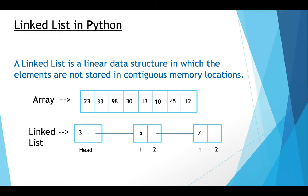The elements of a linked list are called nodes, each of which has two parts: number one, data, and number two, a pointer to the next node. So each node of the linked list holds the data as well as the pointer to the next node. You should also know that the first node of the linked list is called the head.